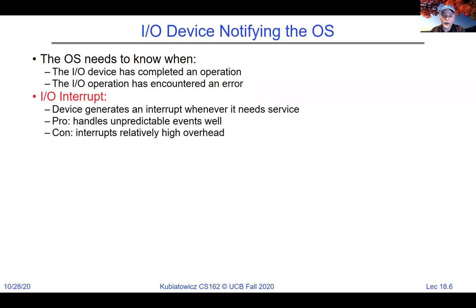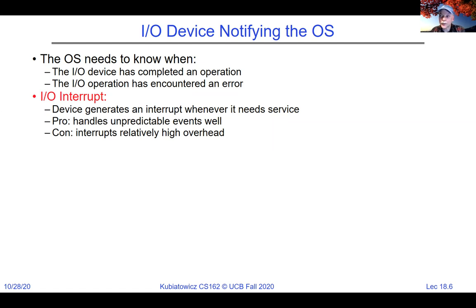If it's a disk, it generates an interrupt when done transferring. The OS wakes up in an interrupt handler, finds the process waiting for the transfer, and puts it back on the ready queue. The pros of interrupts are that they handle unpredictable events well — no overhead until the interrupt occurs. The downside is that an interrupt is a transfer into the kernel: you change the stack, save a bunch of registers — relatively high overhead. If something is generating lots of interrupts on a regular basis, that could be expensive, and perhaps an interrupt isn't the right approach.